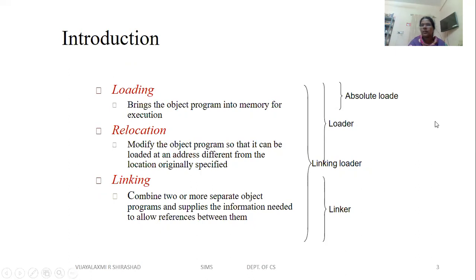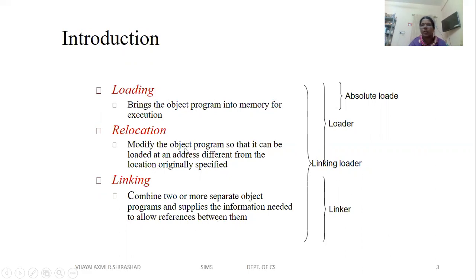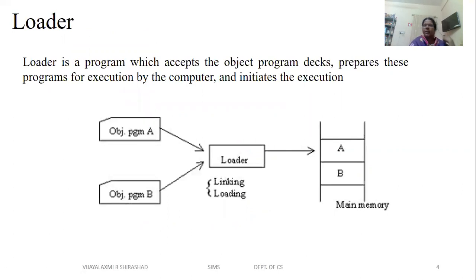The loading process is considered as an absolute loader. The combination of loading and relocation is considered a loader. The combination of loading, relocation, and linking is called a linking loader, while linking alone is performed by a linker. So: loading and relocation is done by the loader; loading alone by the absolute loader; and loading, relocating, and linking by the linking loader.